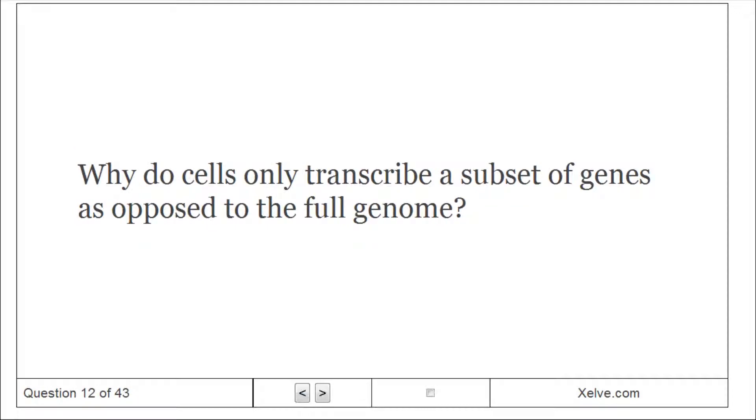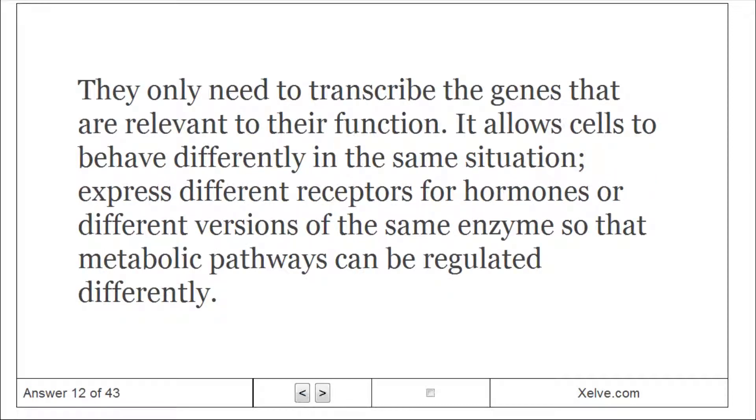Why do cells only transcribe a subset of genes as opposed to the full genome? They only need to transcribe the genes that are relevant to their function. It allows cells to behave differently in the same situation, express different receptors for hormones or different versions of the same enzymes so that metabolic pathways can be regulated differently.